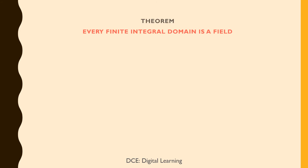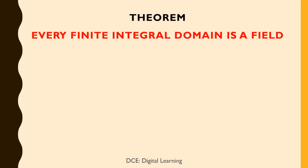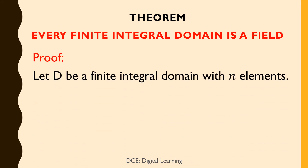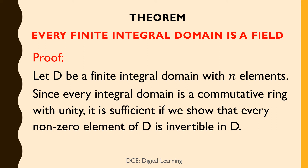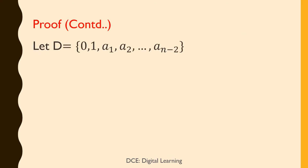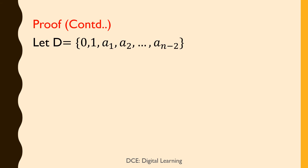We shall now discuss two important theorems connecting integral domains and fields. Theorem: Every finite integral domain is a field. Proof. Let D be a finite integral domain with n elements. Since every integral domain is a commutative ring with unity, it is sufficient to show that every non-zero element of D is invertible in D. Let D = {0, 1, a₁, a₂, a₃, ..., aₙ₋₂} with all elements distinct.